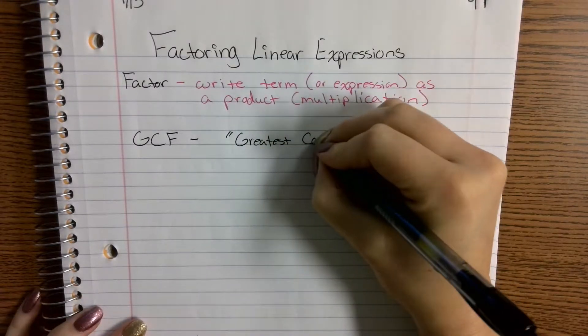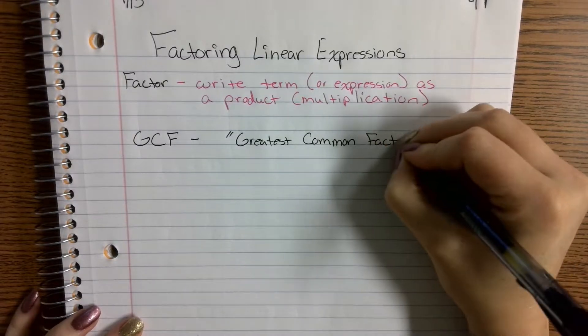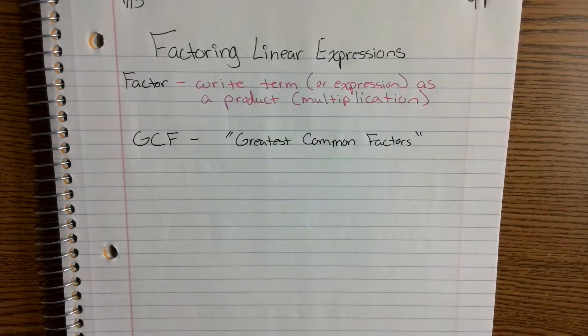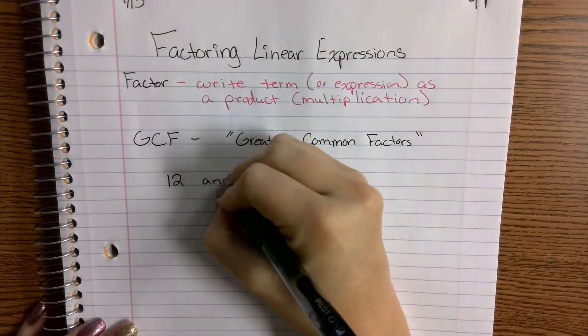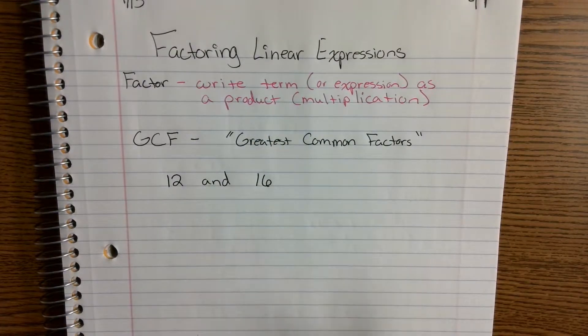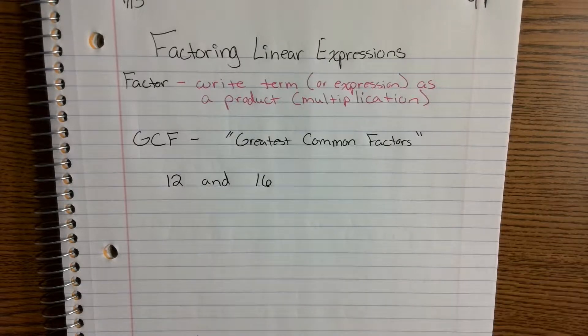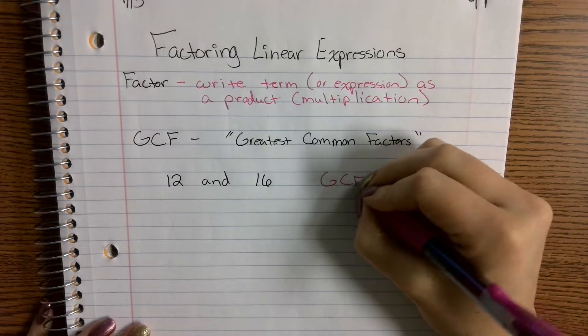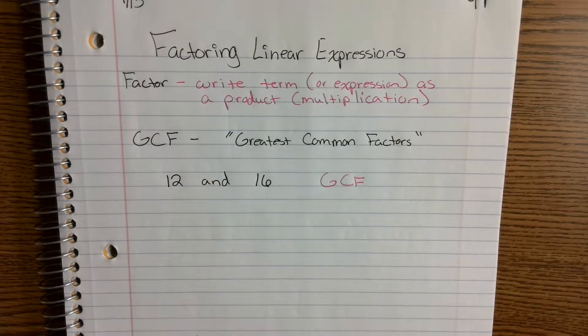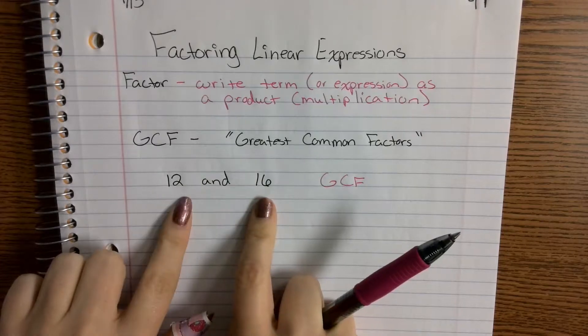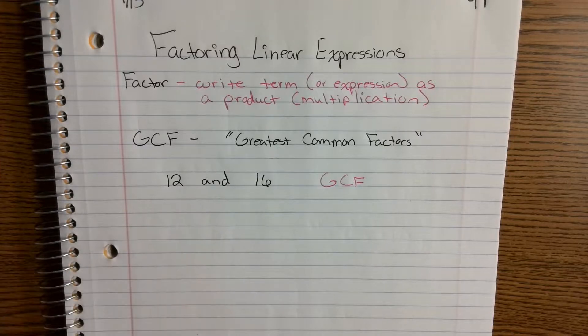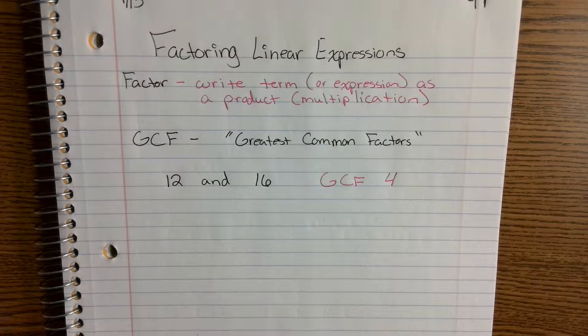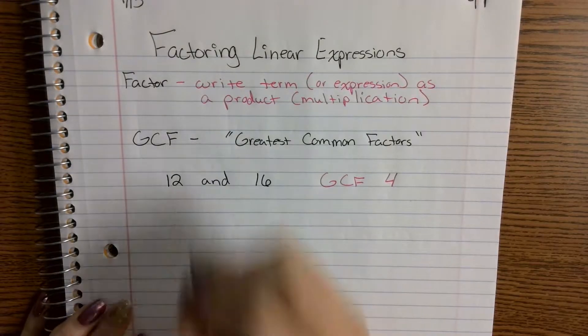So that's what we're going to be doing today is we're going to identify greatest common factors for expressions. So not just a number. So you guys are used to doing things like, I've got a 12 and I've got a 16. So now I need to figure out what my greatest common factor of 12 and 16 is.